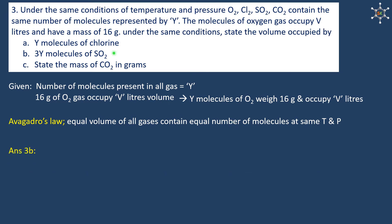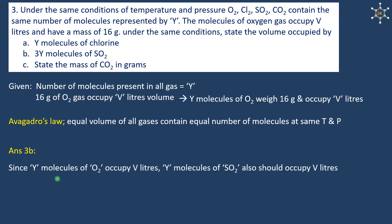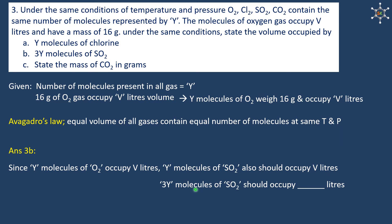For question B, we need to find the volume occupied by 3Y molecules of sulfur dioxide. Y molecules of oxygen occupy V liters, so Y molecules of sulfur dioxide also occupy V liters by Avogadro's law. Cross multiplying for 3Y molecules of sulfur dioxide gives us a volume of 3V.